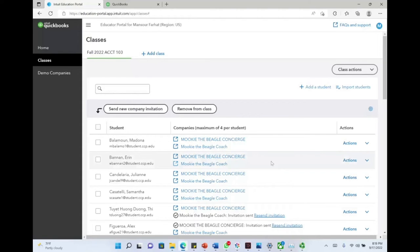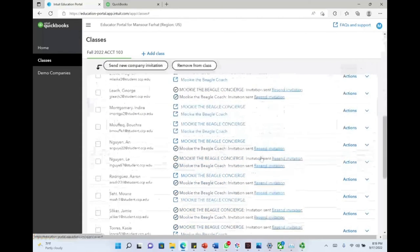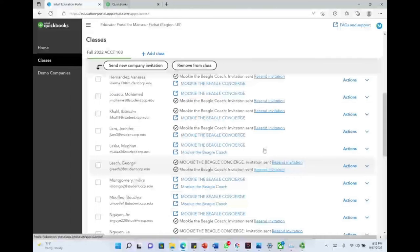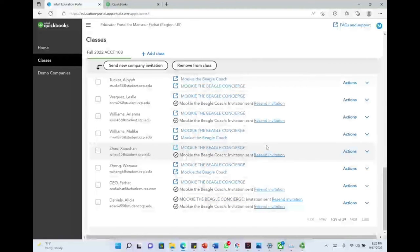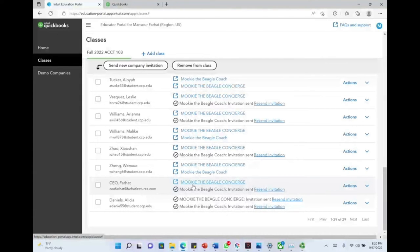This is a QuickBooks class that I am teaching. I assigned companies to my students, and they're supposed to access those companies. Basically it's their company. I'm their accountant, and they need to process transactions - sales, purchases, and so forth. I'm not going to look at any particular person. I'm going to look at my company, Mookie the Beagle Concierge. I enrolled myself as a student.